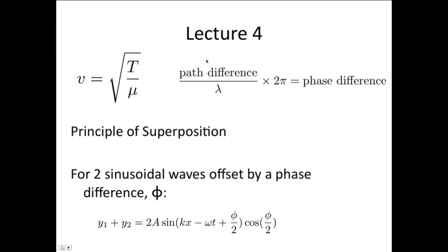In lecture 4, we derived the expression for the velocity of a wave in the string. v equals the square root of tension over μ, where tension is the tension and μ is the mass per unit length.